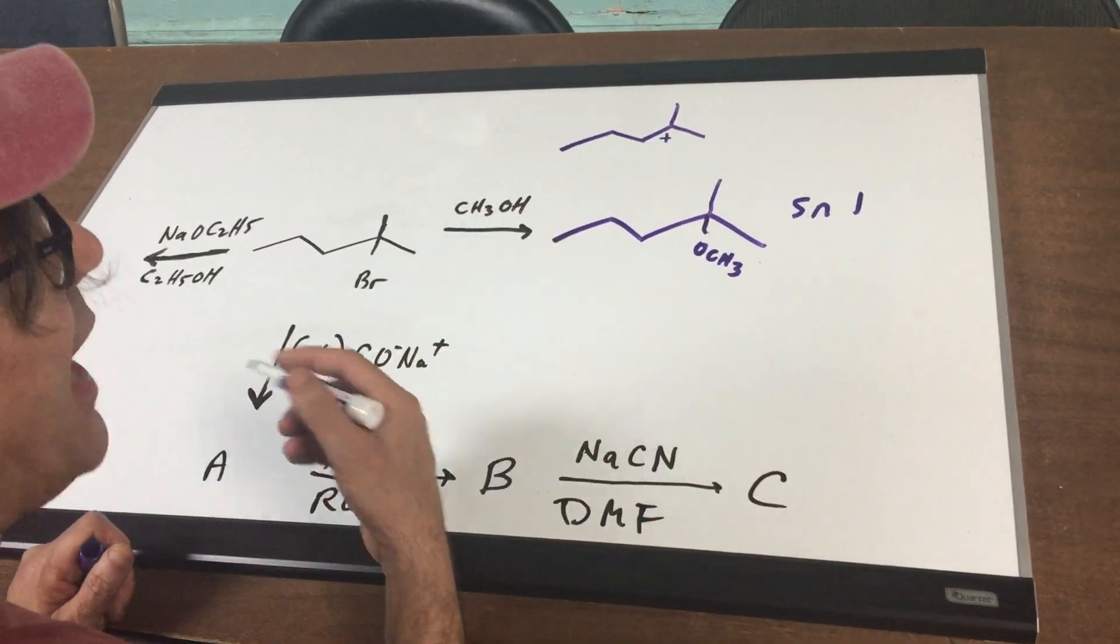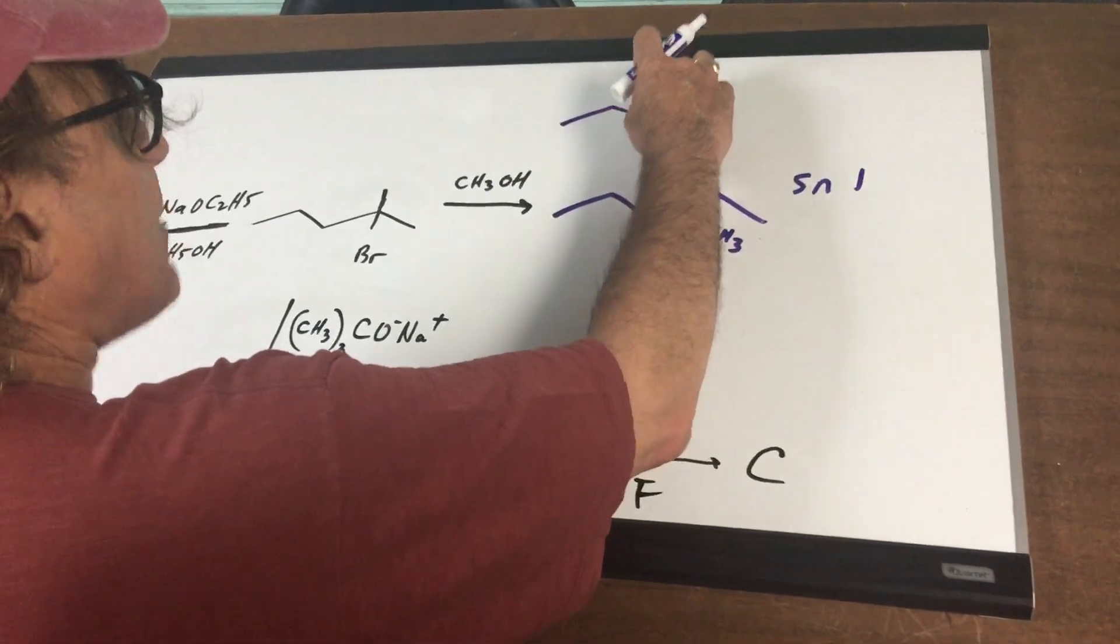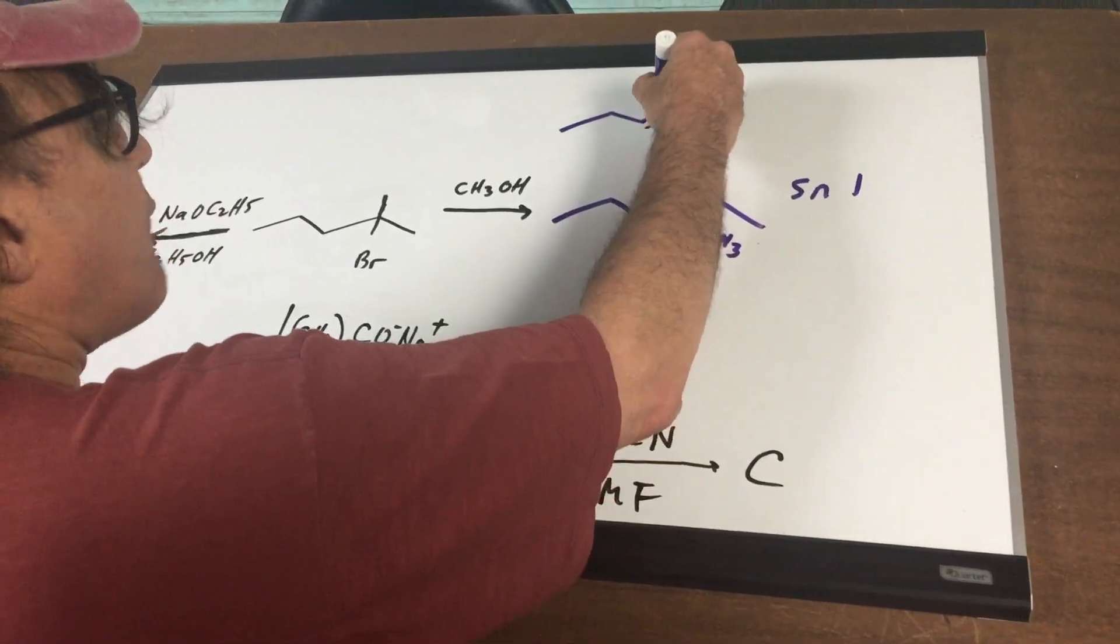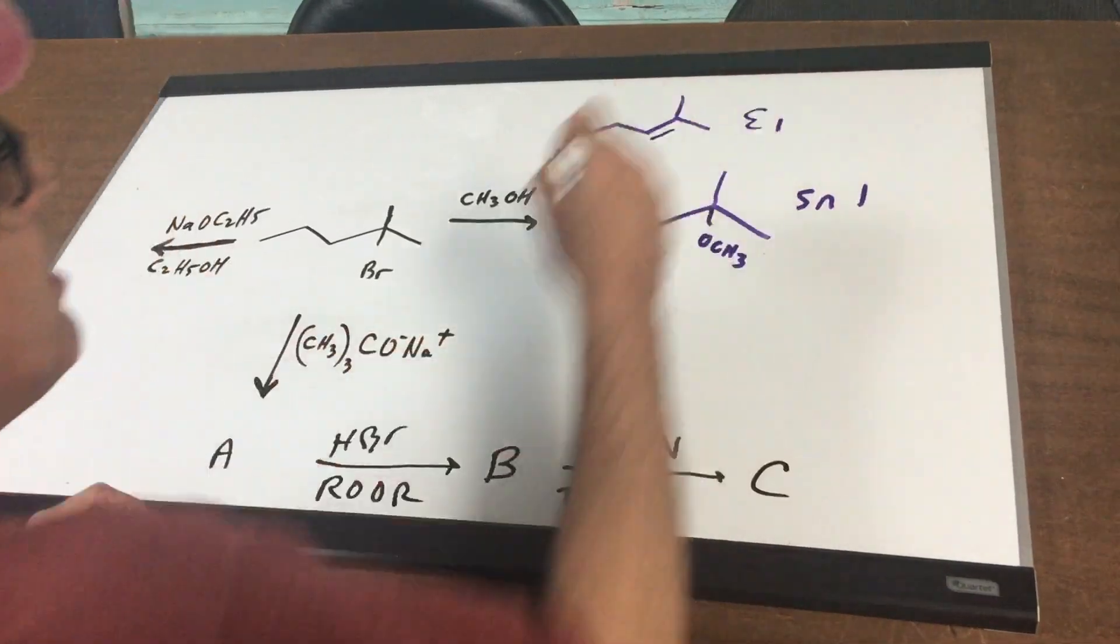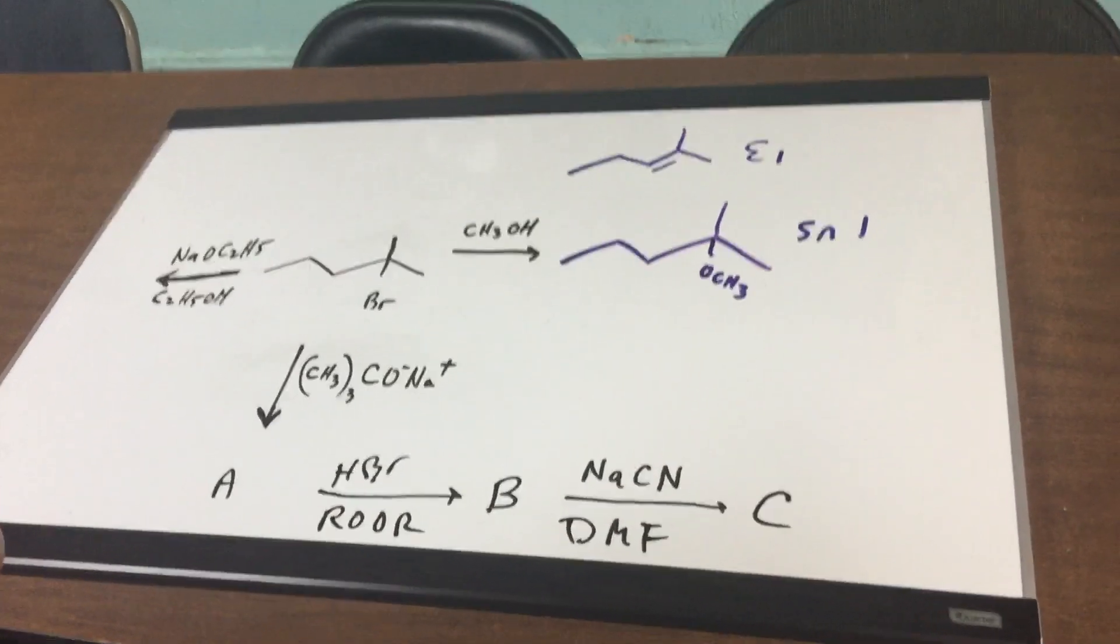meaning what we call the Zaitsev rule, meaning you want to form the more substituted alkene. So if you did that, you would form the E1 product. So this mechanism would be SN1 and E1.